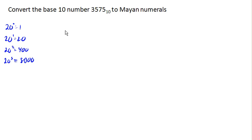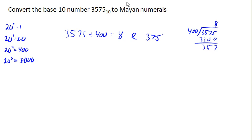So first we're going to take 3575 and divide it by 400. So 400 divided by 3575, let's see, it divides in 8 times with a remainder of 375. I think I got these numbers swapped around here.